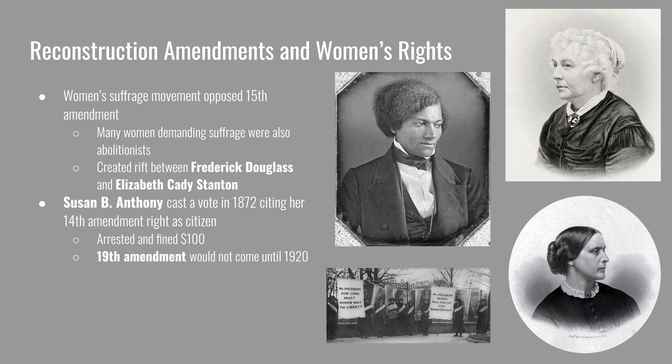Stanton and Frederick Douglass had a notable falling out over the issue, as Douglass asked women to allow progress to take its course, even if it meant waiting longer for equality. In the election of 1872, Susan B. Anthony cast a ballot asserting her 14th Amendment right as a citizen. She was arrested and fined $100. In her trial she was not allowed to speak in her own defense, the judge dismissed the jury and issued a guilty verdict, and President Grant's pardon was refused — accepting it would have been an admission that it was a crime for a woman to vote. The 19th Amendment granting women the right to vote would not come until 1920.